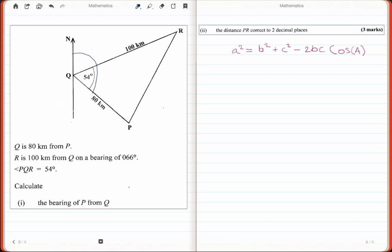Well, from the information it said that R from Q is 066 degrees which is 66 degrees, and they give us already PQR which is 54. So the answer to this should be 66 degrees plus 54 degrees and that should give you 120 degrees. That is all it is for part 1.